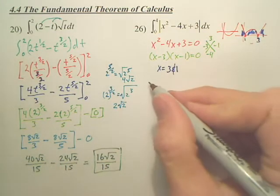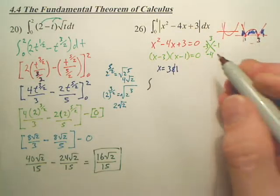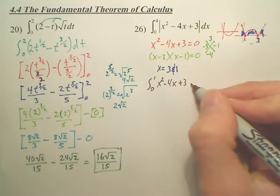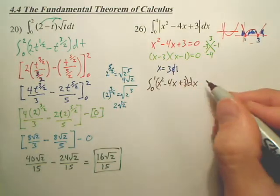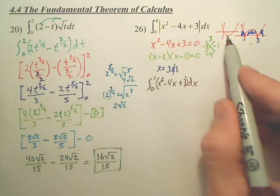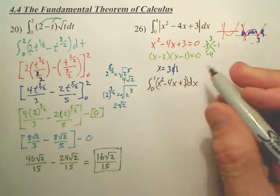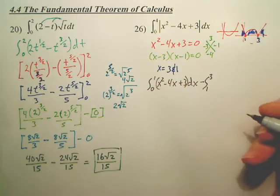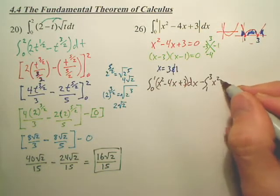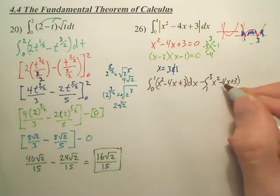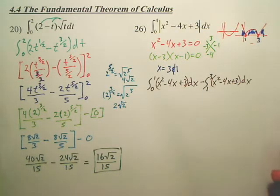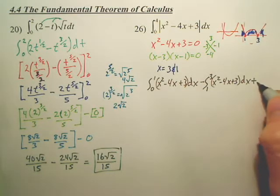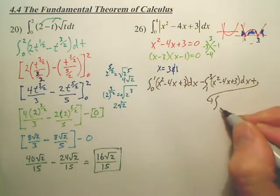So here's how you set it up. The first interval is from 0 to 1, and you just simply do the normal equation. Now the second piece - wasn't it normally going to be negative? So you have to subtract that, and the interval is from 1 to 3. And the last interval: is it positive? Yes. So you're going to add the integral from 3 to 4.